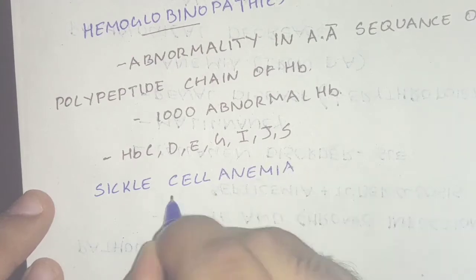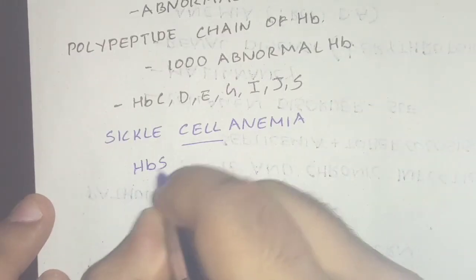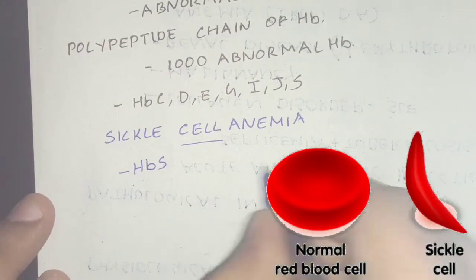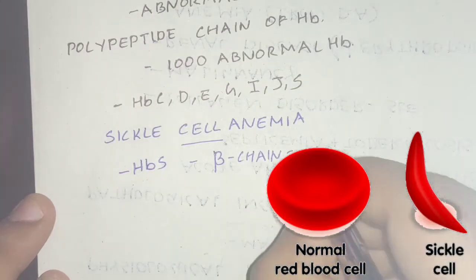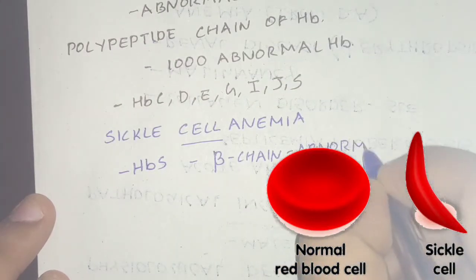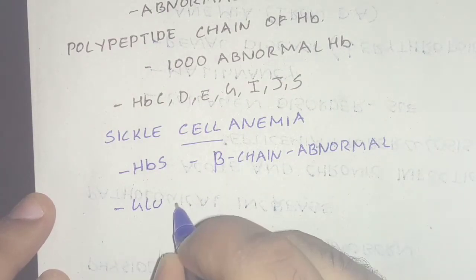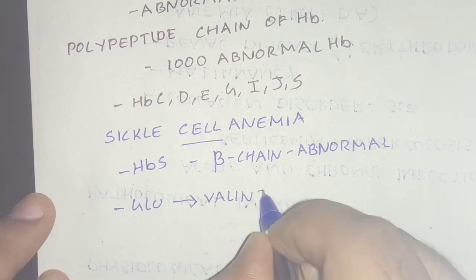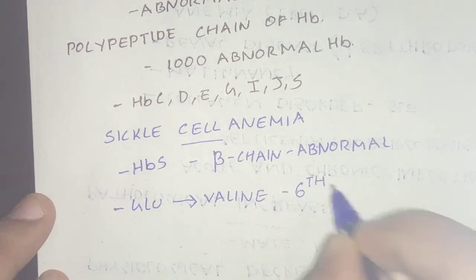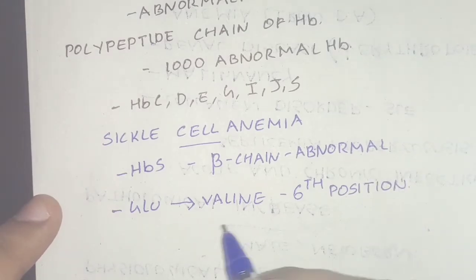In sickle cell anemia, the abnormal hemoglobin is HbS. The alpha chain is normal, but the beta chain is abnormal — the sixth position, which is glutamic acid, is replaced by valine at the sixth position of the beta chain.